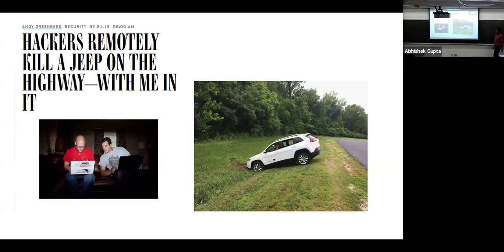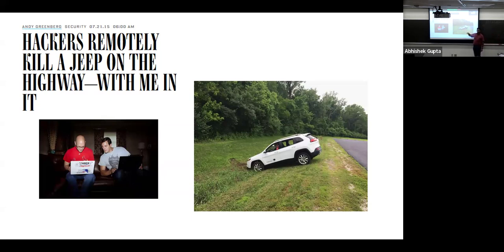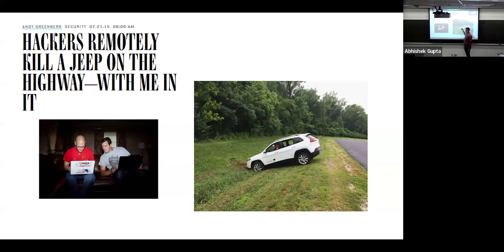A widely reported attack from 2015 involved a Grand Cherokee in St. Louis. The attackers were sitting in Texas and remotely hacked the vehicle's infotainment system, which was connected to the braking and steering system. They sent commands to the steering and braking to stop the car and change lanes — and they overpowered the driver. The driver was in the vehicle trying to control it but couldn't, because signals were overriding his inputs.